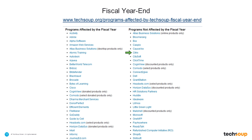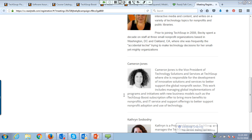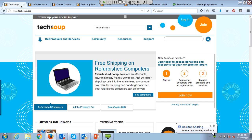Most organizations don't request their allotment of what they can get in the course of a year or a two-year window. Some products say you can only request one item in a given timeframe; some say up to four. I wanted to highlight that there are so many things available, and I want to go ahead and share my desktop to show one thing that I think is pretty great on TechSoup's website.